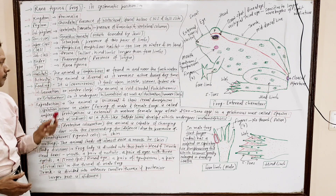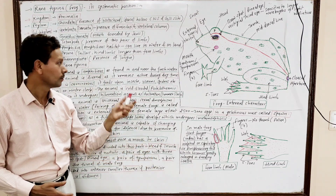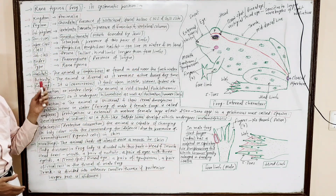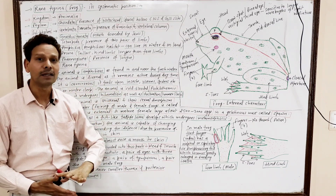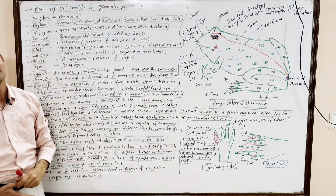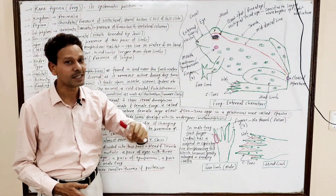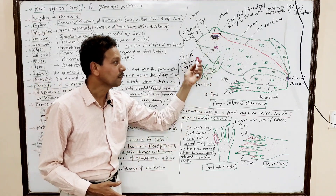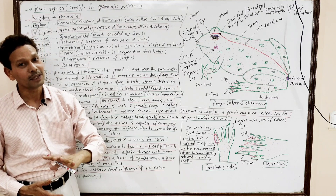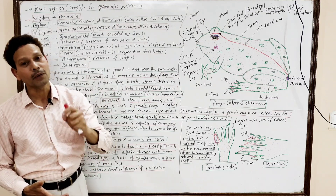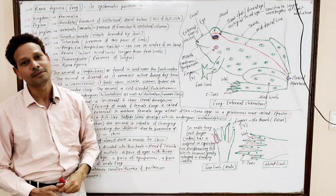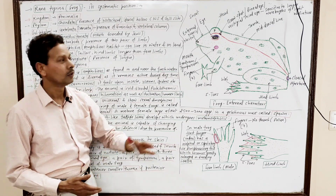Habitat: The animal is amphibious, found in and near water bodies. Activity: The animal is diurnal — it means the frog remains active during daytime. But note that frog and toad are two different animals. The toad is nocturnal, becoming active during night, while the frog remains active during daytime.